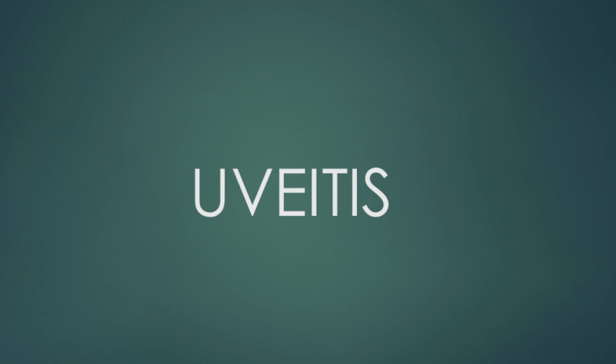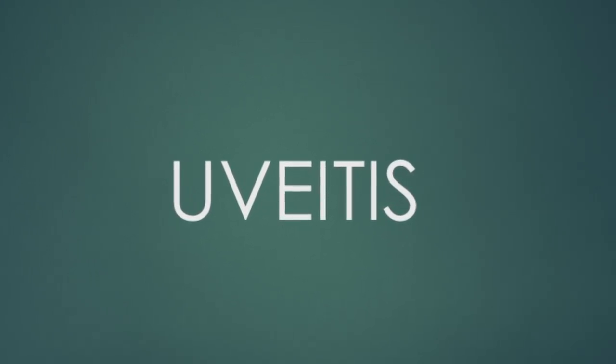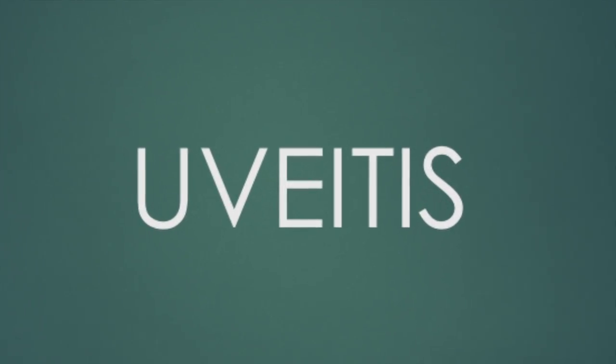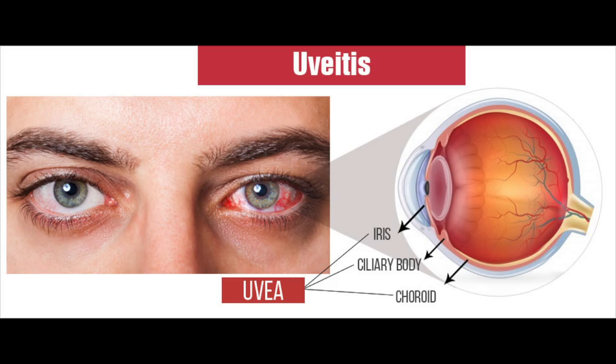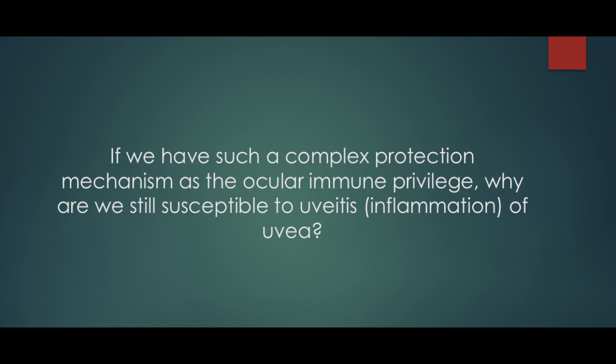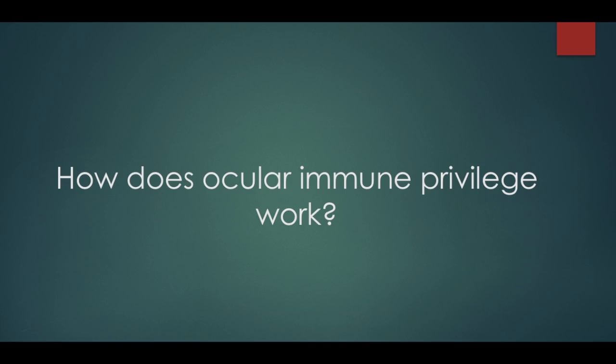Let's take a look at some of the diseases that can affect the eye. Uveitis refers to a group of inflammatory diseases in the eye linked to swelling and destruction of eye tissues. The question then is: if we have such a complex protection mechanism as ocular immune privilege, then why are we still susceptible to uveitis, which is an inflammation of the uvea? To understand and answer this, we need to understand how ocular immune privilege works.